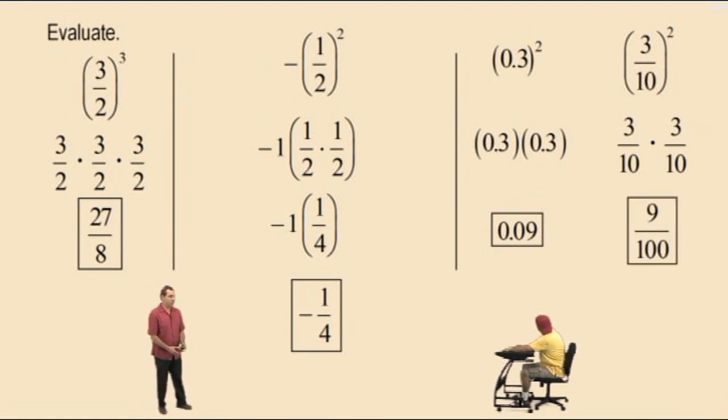How do you write 9 one-hundredths as a decimal? 9 one-hundredths, or .09, which is 9 one-hundredths. It's the same thing. So anyway, that's enough for now. Let's take a break and we'll see you all again soon.